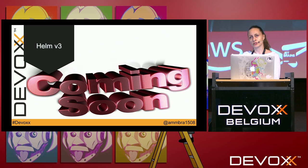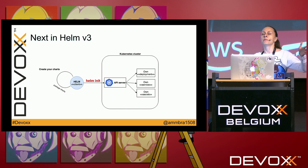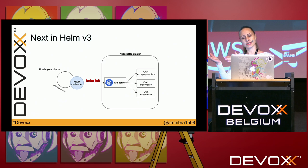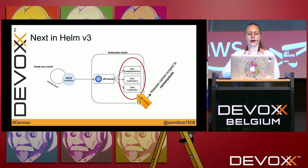With Helm 3, which is available for trial with v3.0.0-rc, the Tiller is no longer present. Helm is moving from a client-server architecture to a client-library architecture, following Kubernetes improvements more closely. Since there is no more Tiller, there is no more `helm init` and no more need for configuring the Helm home — many configurations required in Helm 2 are no longer necessary with Helm 3.